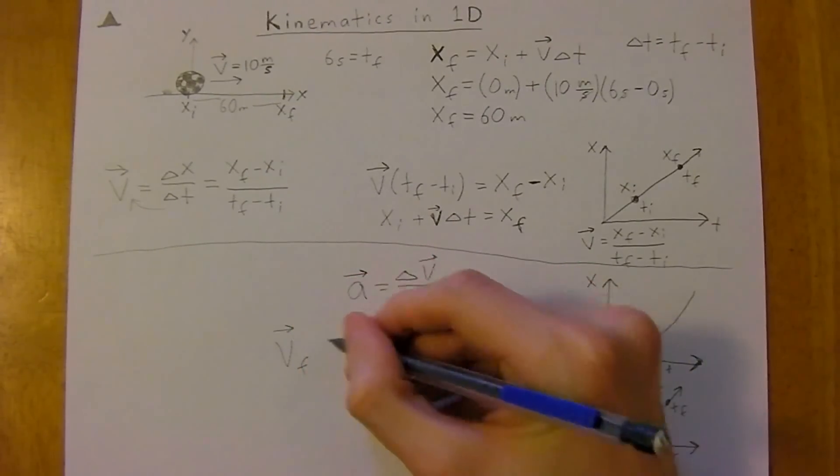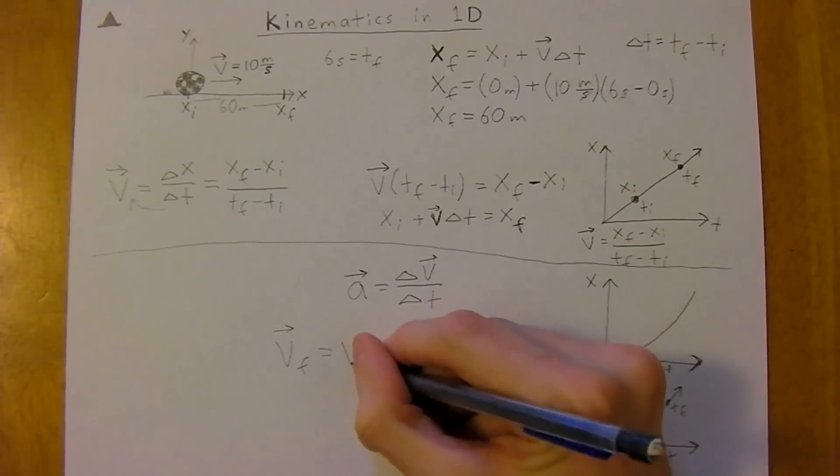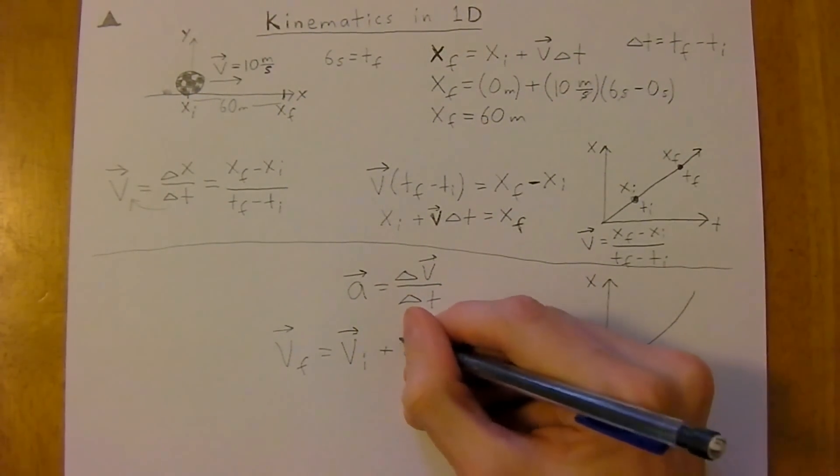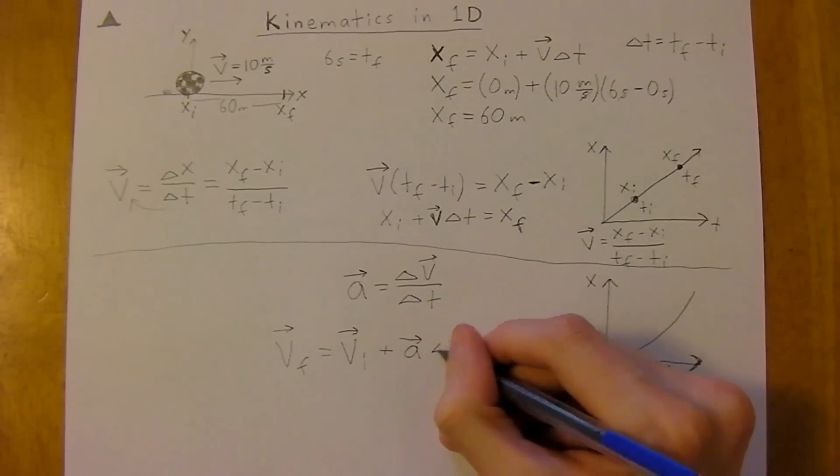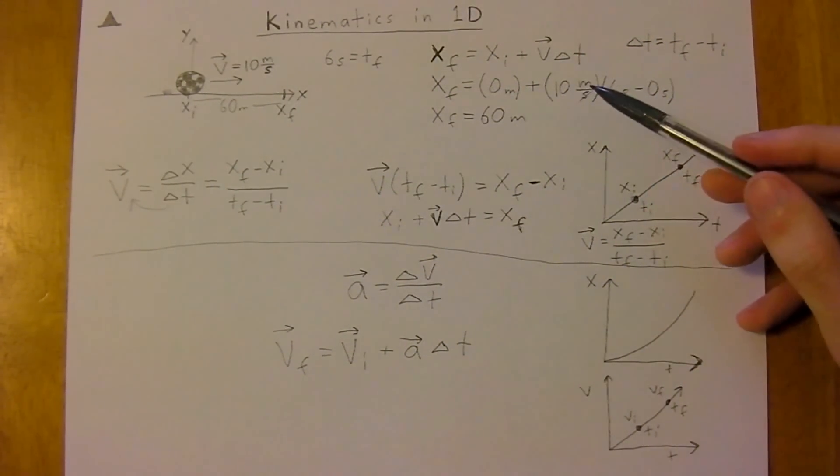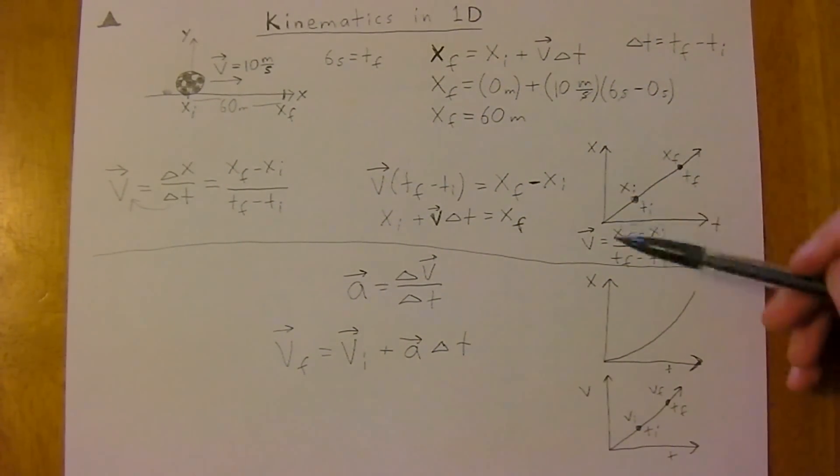Is equal to your velocity initial plus acceleration times your change in time. So these are the two key equations to remember for kinematics in one dimension.